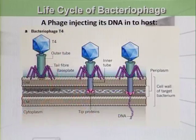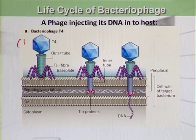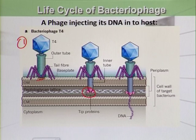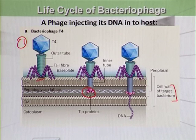Now we will see how the phage injects its DNA into the host cell. The first step is attachment, where the bacteriophage recognizes the receptors on the host cell. Then in the next step it releases enzymes or tip proteins — more specifically lysozyme — which causes the bacterial cell wall to break down.